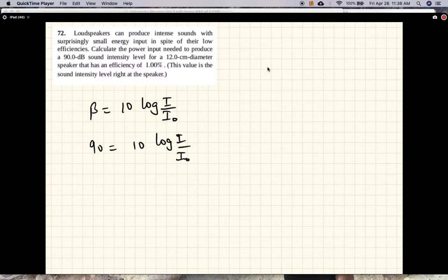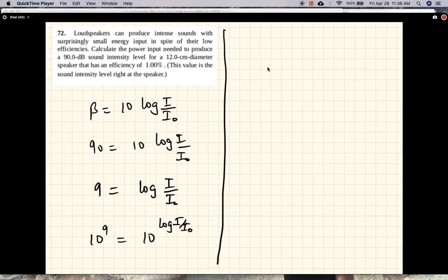So 90 divided by 10 is 9 equal to log I over I₀. 10 to the 9 is 10 to the log I over I₀. So 10 to the 9 is I over I₀. I is I₀ times 10 to the 9.